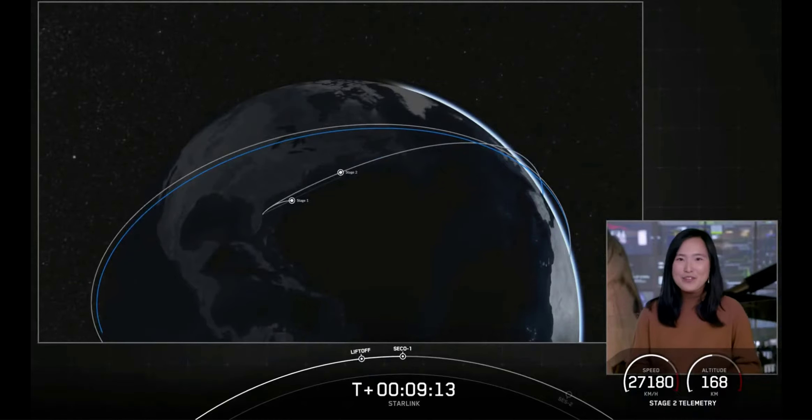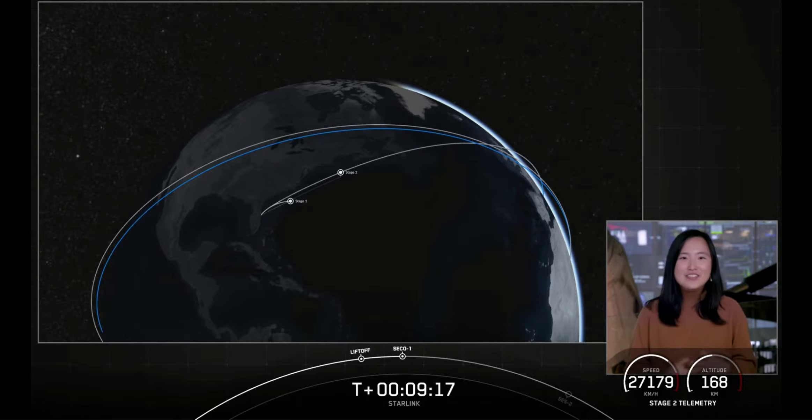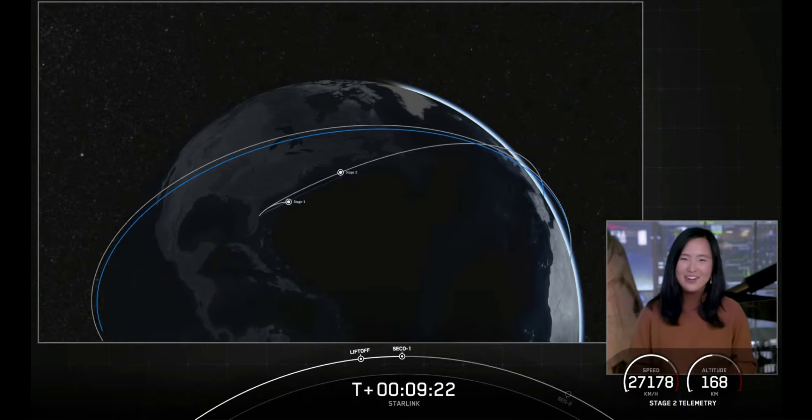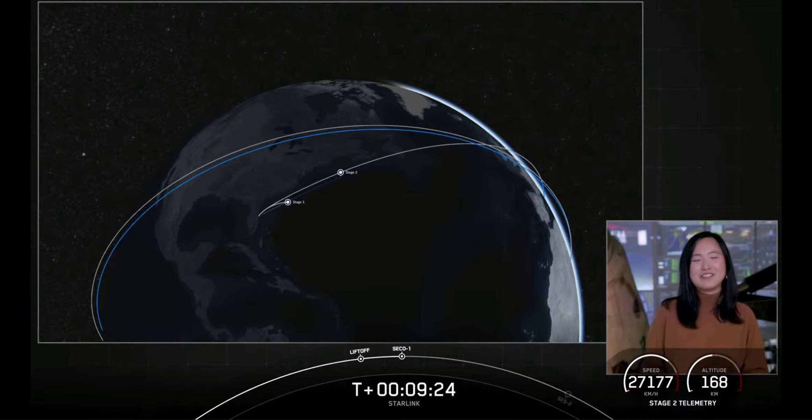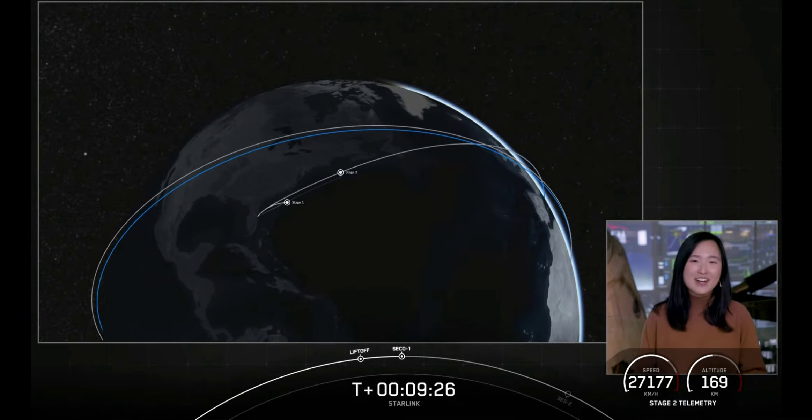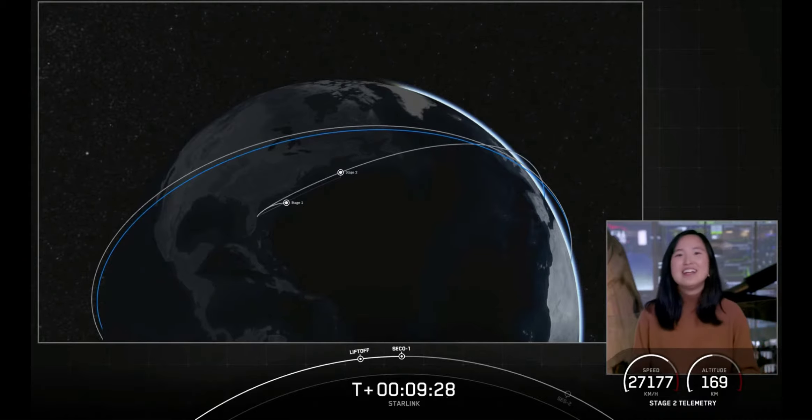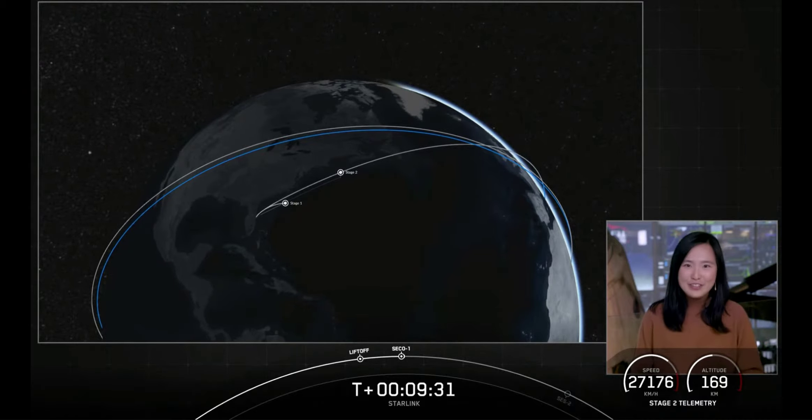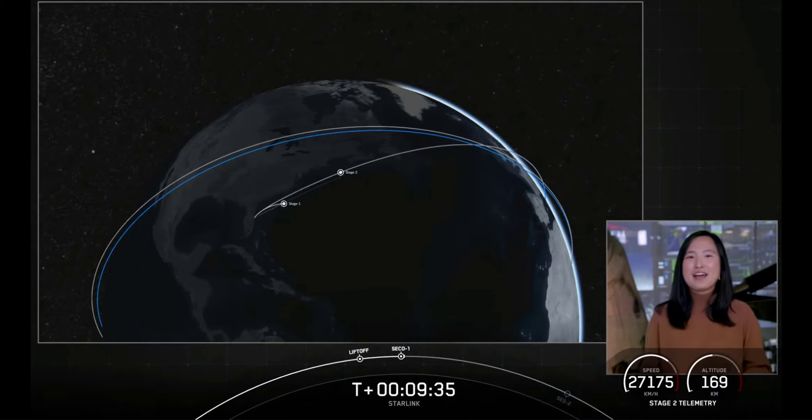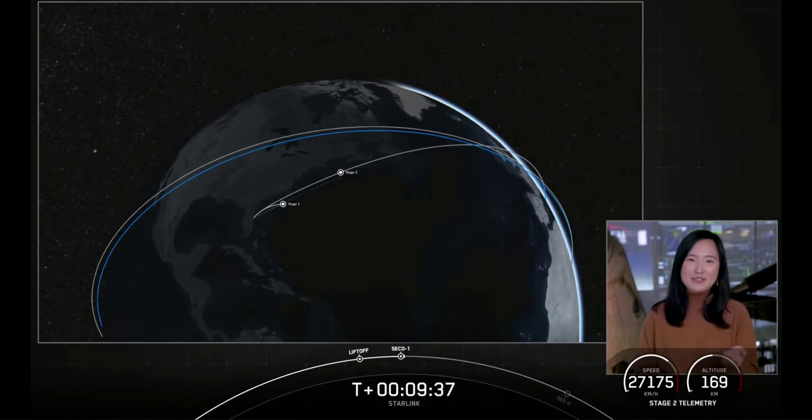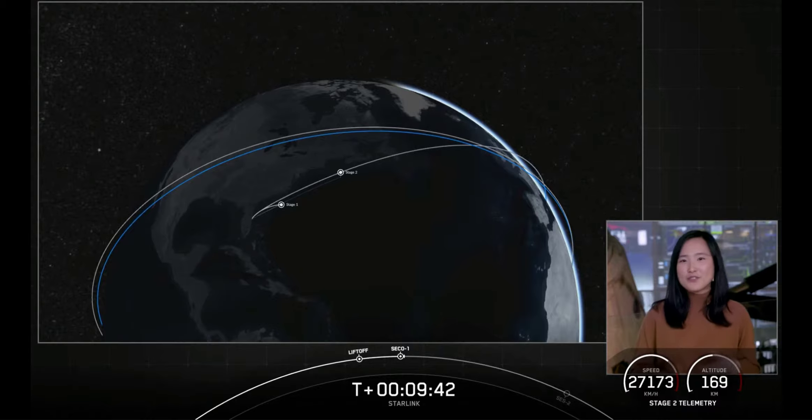This is the second time that we've recovered a booster for the eighth time. And in just a few seconds here, you're going to hear the callout for, well, we just had a callout for SECO-1, in fact, for our second stage and a confirmation for a good orbit. And now that stage two is going to coast in this orbit for the next 35 minutes or so. And while that happens, we'll take a look at this animation showcasing where we are in the coast phase. And we'll see you back here at T plus 45 minutes for a second stage relight.